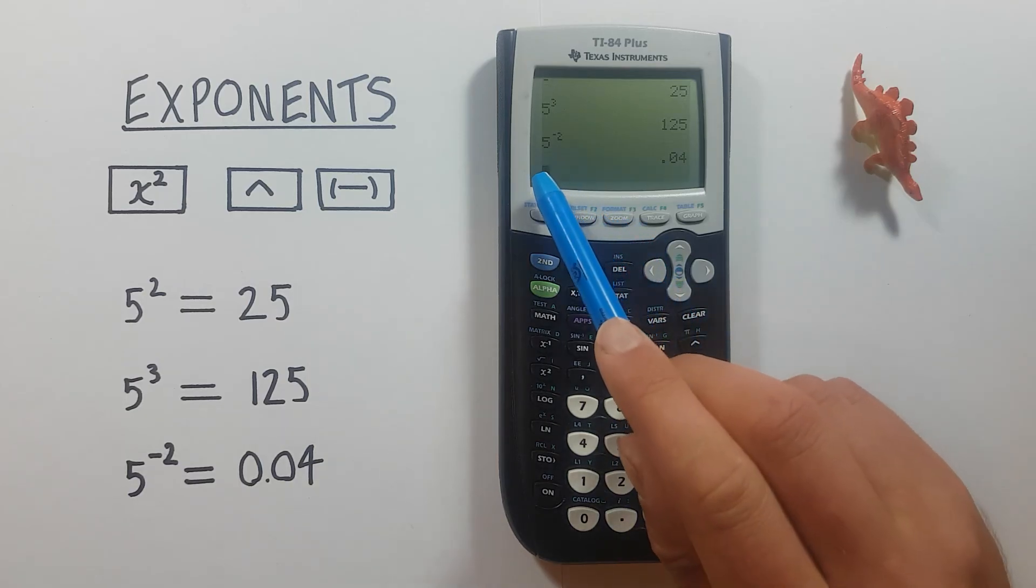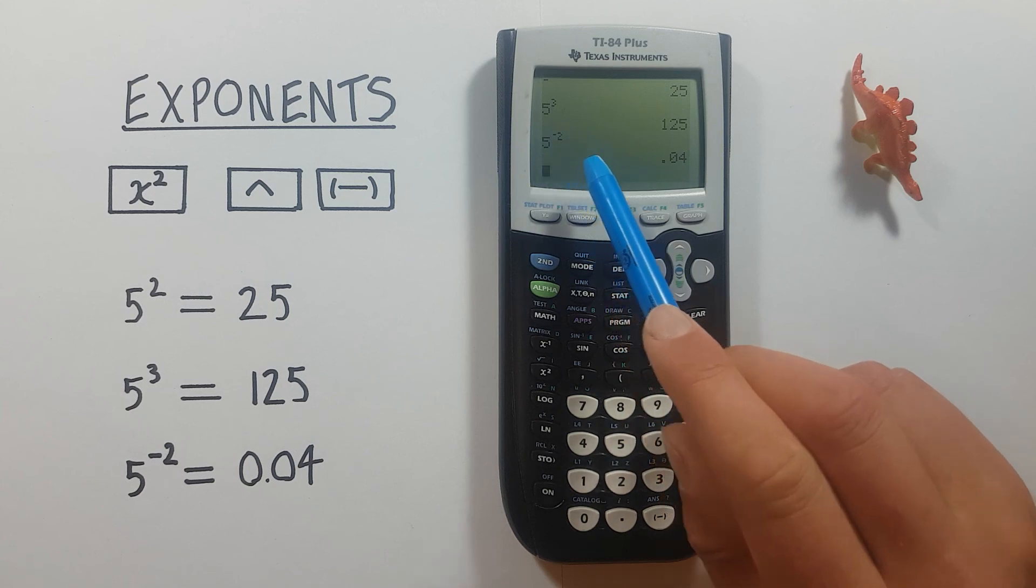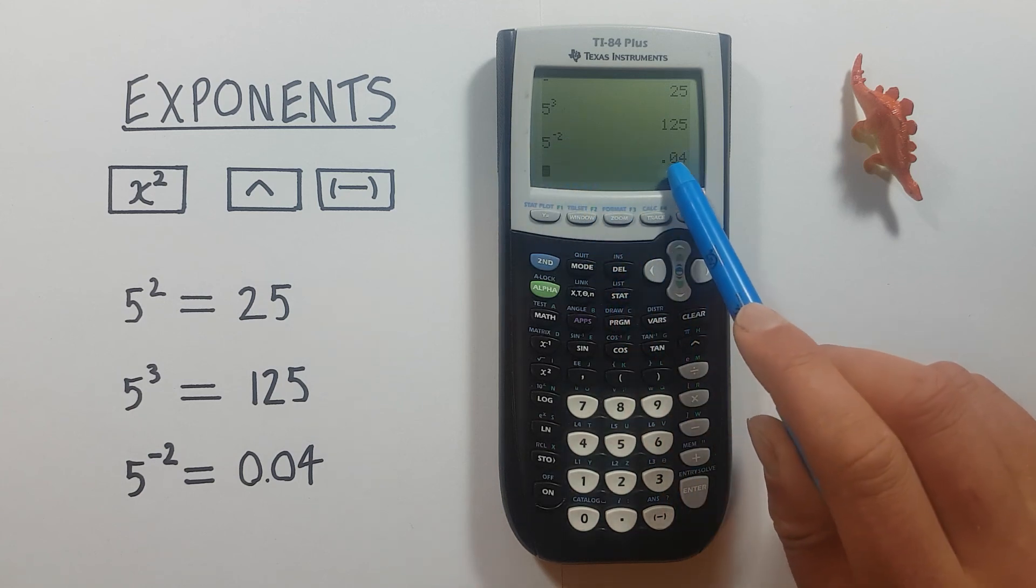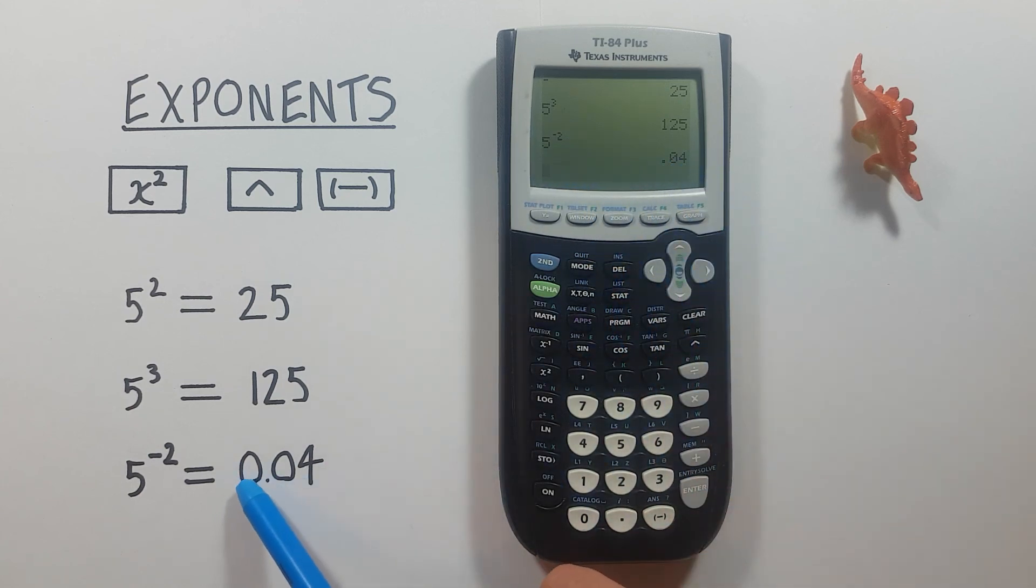And we get a result of 5 to the power of negative 2 is equal to 0.04, which is correct.